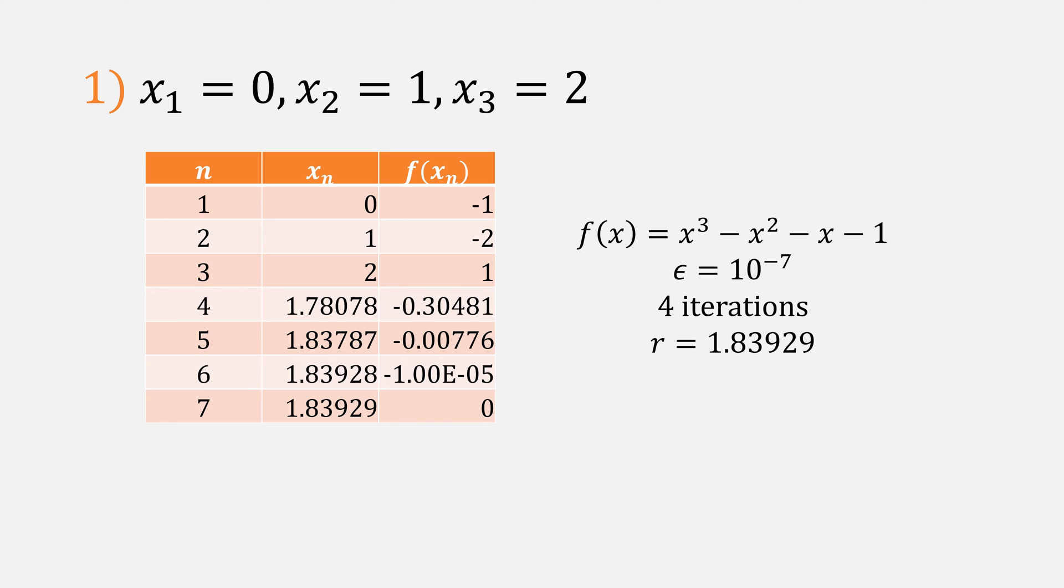Our first approach is going to use the points 0, 1, and 2, and it found the root in about four iterations, the value of 1.83929. But where Muller's method really shines is in finding complex roots.